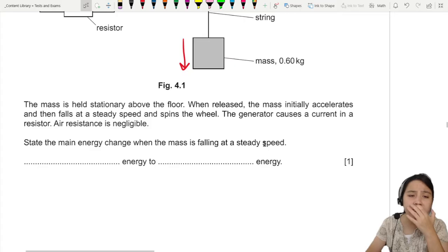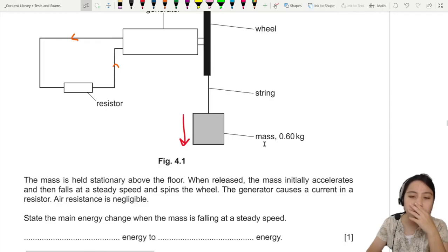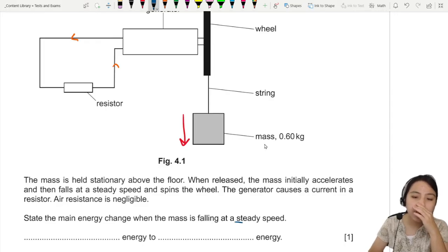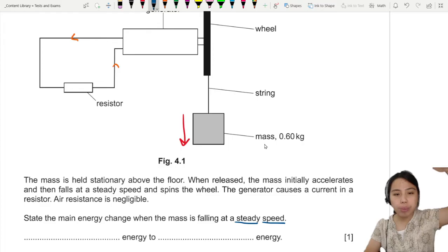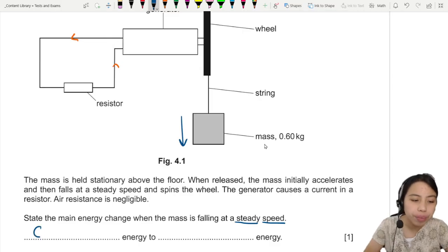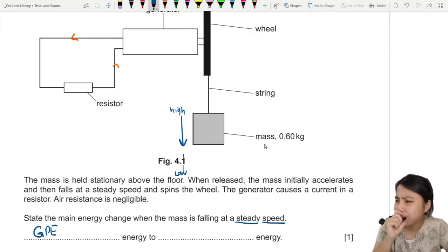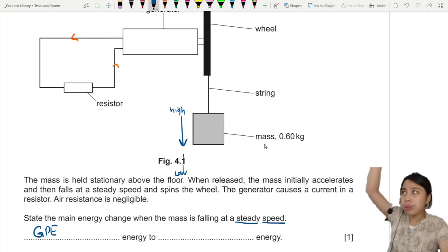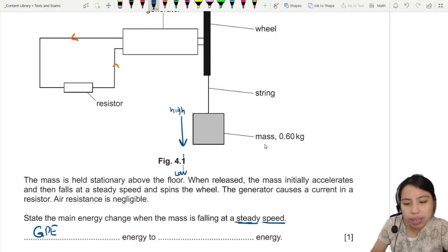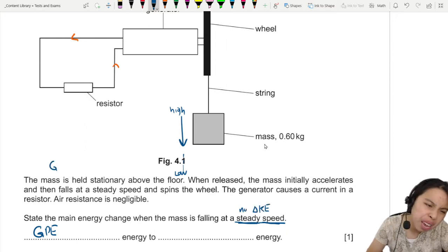All right, so state the main energy change when the mass is falling at a steady speed. Key note here is steady speed. So the mass is going from high up to lower down, that's a change in gravitational potential energy. But what energy is converted to though? Kinetic energy? Actually, normally yes, objects fall from high to low, but in this case steady speed is a steady speed. So there is no change in kinetic energy. So that's not the main change.